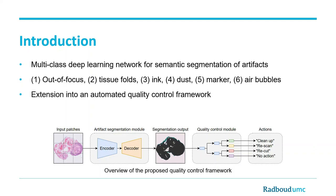In this work we trained a multi-class deep learning network for the semantic segmentation of six commonly seen artifact types. These included out of focus, tissue folds, ink, dust, marker, and air bubbles.